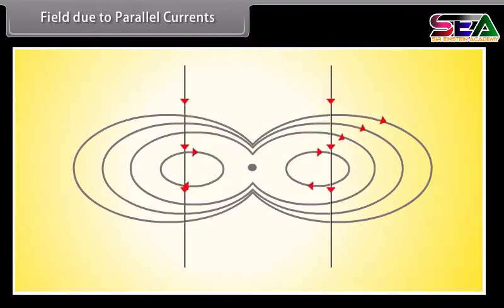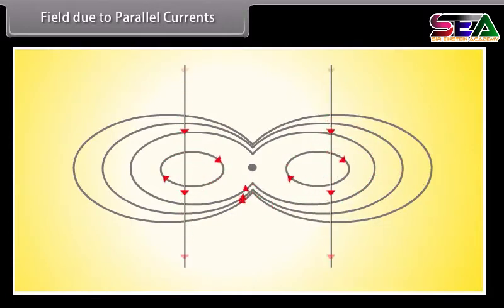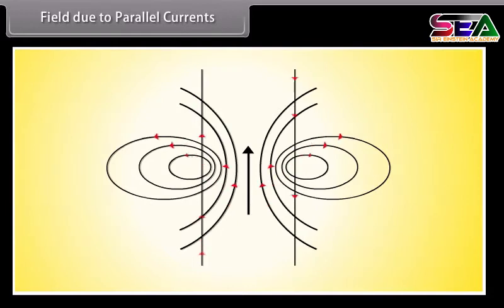Field due to parallel currents: When two parallel conductors carry current in the same direction, the combined magnetic field indicates attraction between the conductors. When the two parallel conductors carry currents in opposite directions, the pattern of the magnetic field indicates repulsion between the conductors.